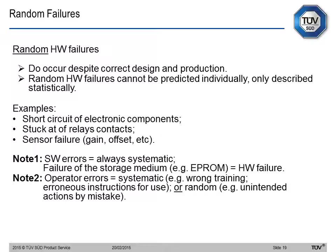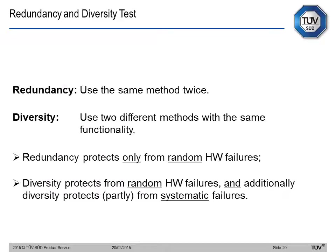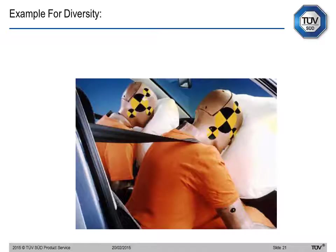Random failures must be controlled at run time by the same measures. There are different tests you can apply: redundancy, diversity, and self-tests. We will look specifically at self-tests in this webinar. Redundancy is when we use the same method twice; diversity is when we use two different methods with the same functionality. Redundancy protects only from random hardware failures, while diversity protects from both random and partly from systematic failures depending on how it is used.